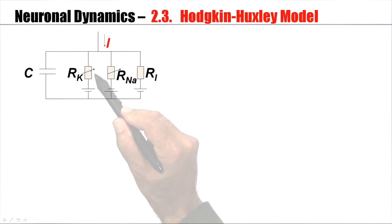So, we have a time-dependent resistance indicated here as an arrow. This is true for potassium. This is true for sodium. The leak current, however, is assumed to be constant. It's a phenomenological current that summarizes all other ion channels and all other effects that are not studied in detail.